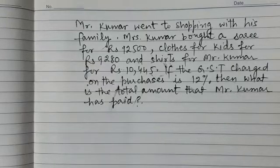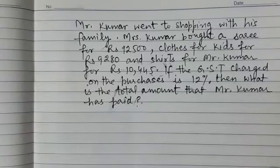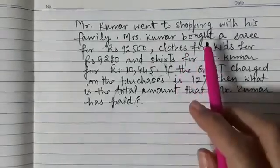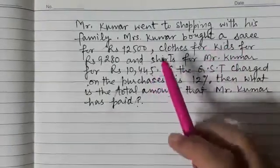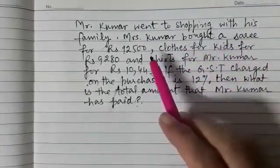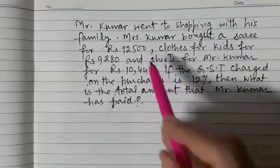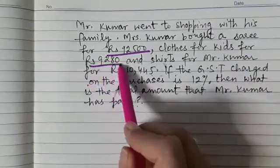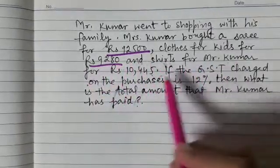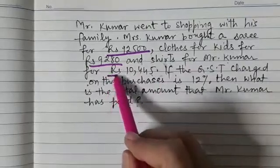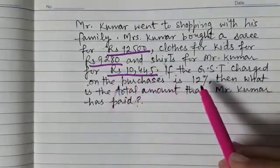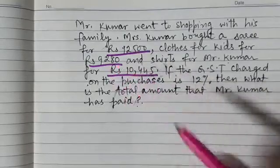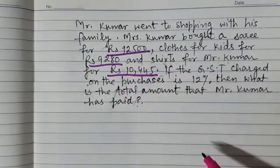Let us solve another interesting question from the chapter Profit, Loss and Discount. Mr. Kumar went shopping with his family. Mrs. Kumar bought a saree for Rs. 12,500, clothes for kids for Rs. 9,280, and shirts for Mr. Kumar for Rs. 10,445. These are the three amounts which were spent by the Kumar family.